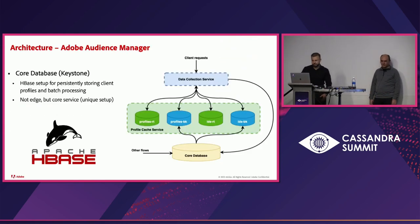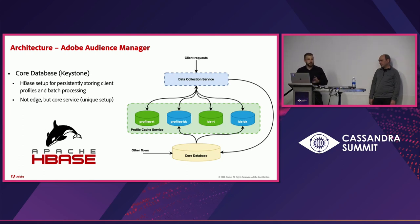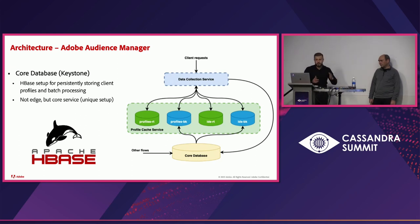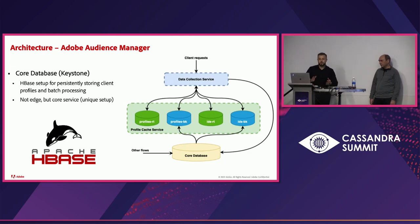We go on with the architecture, starting from the core database. As previously mentioned, it's an HBase setup in a single central location. Its main purpose is to store persistently all the data that we collect, and also it is used for batch processing. Data here arrives from the data collection service, but also from other flows.